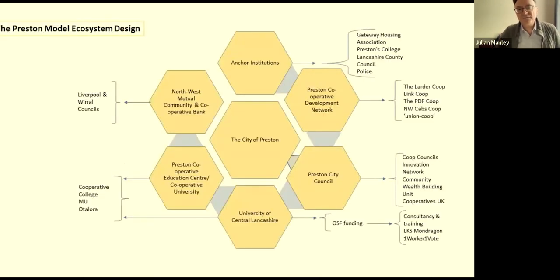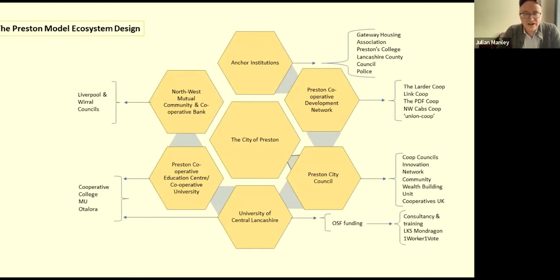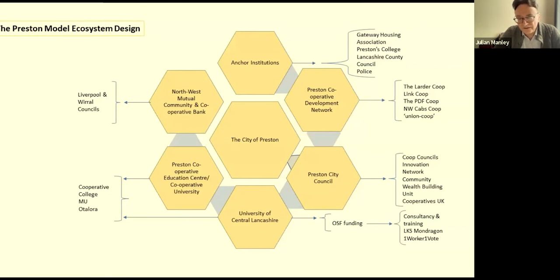The model looks something like this: you've got the city of Preston right in the middle, with different aspects of this jigsaw around it — the anchor institutions, the Preston Cooperative Development Network, Preston City Council, the university, the essential partnership between the university and the council. And recently we have the creation of the Preston Cooperative Education Centre and the Northwest Mutual Community and Cooperative Bank. The education centre and the bank are essential parts of this whole jigsaw.